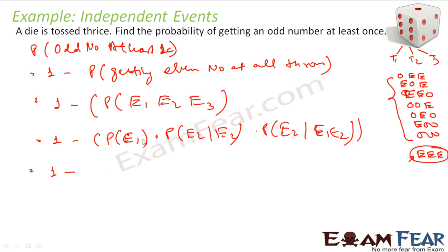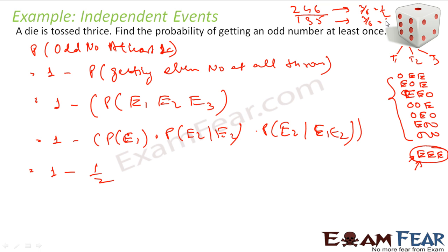Now, the probability of getting an even number is 1/2. Why 1/2? Because the even numbers are 2, 4, 6 and the odd numbers are 1, 3, 5. So probability of even is 3/6, that is 1/2. And probability of getting an odd number is also 3/6, that is 1/2. The die has 6 outputs and 3 elements each, so 1/2. Now all throws are independent events.